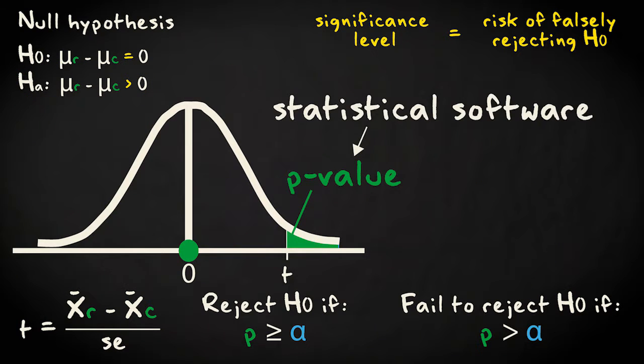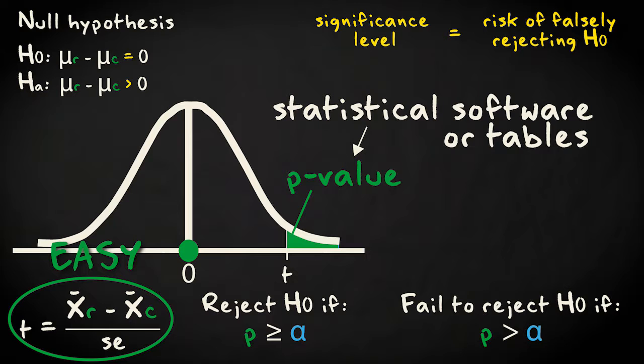Nowadays we use statistical software to calculate the p-value, but you can also use tables. Back when computing power was limited or unavailable, calculating a test statistic value manually was relatively easy, but a p-value was a lot of work, especially for more complicated test statistic distributions.